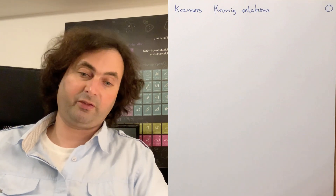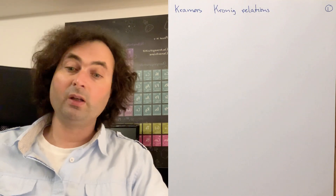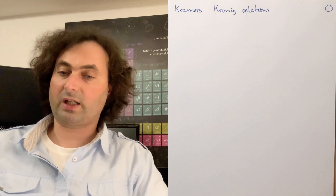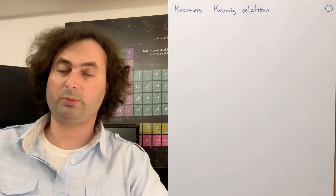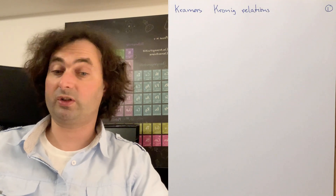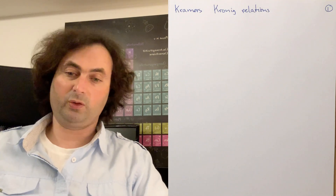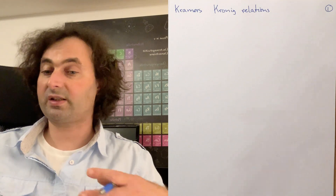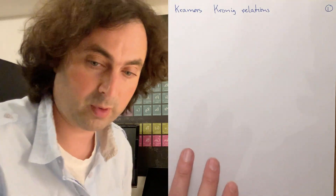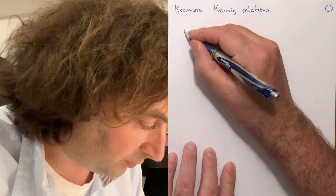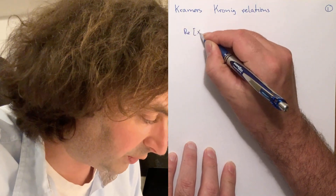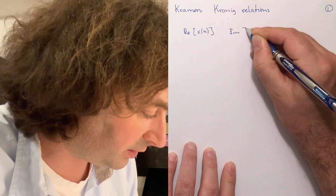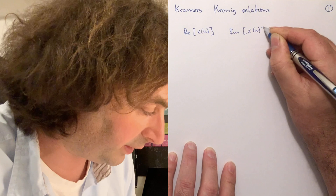Both of them have definite meanings. What I want to show you, and what the Kramers-Kronig relations actually state, is that the real part of the susceptibility and the imaginary part of the susceptibility are related to each other. If you know one, you know the other — so it's actually only a single-valued function that you can choose. The real part of χ(ω) and the imaginary part of χ(ω) are related.